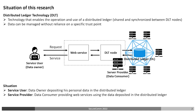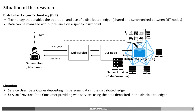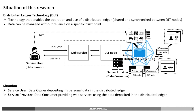The following situation is set up for this study. The service user is a data owner who deposits personal data in the distributed ledger. The service provider is a data consumer which provides the service user with unique web services using the data in the distributed ledger. Deposited personal data may include assets, health data, licenses, and so on. There are various possible web services using this data.